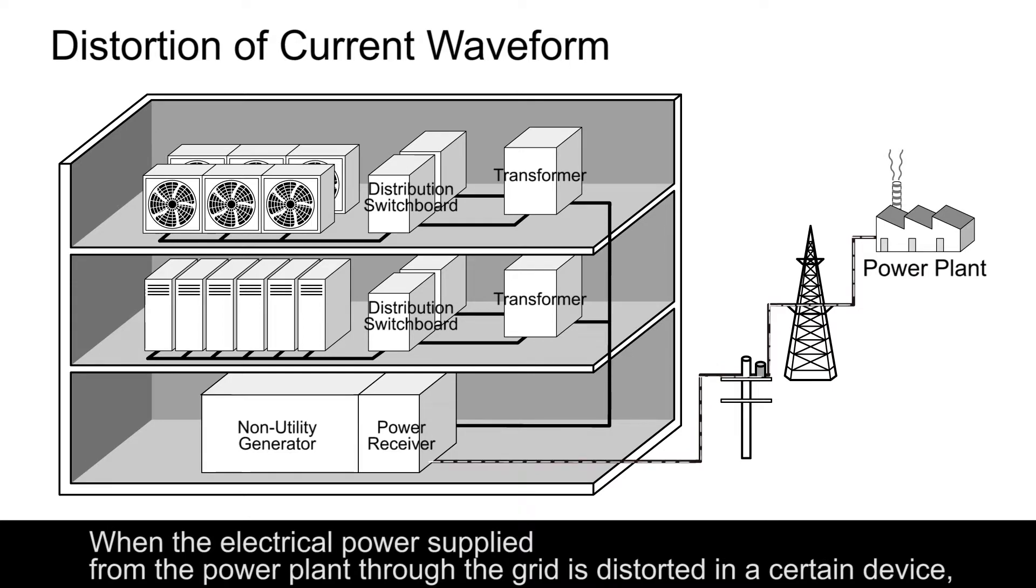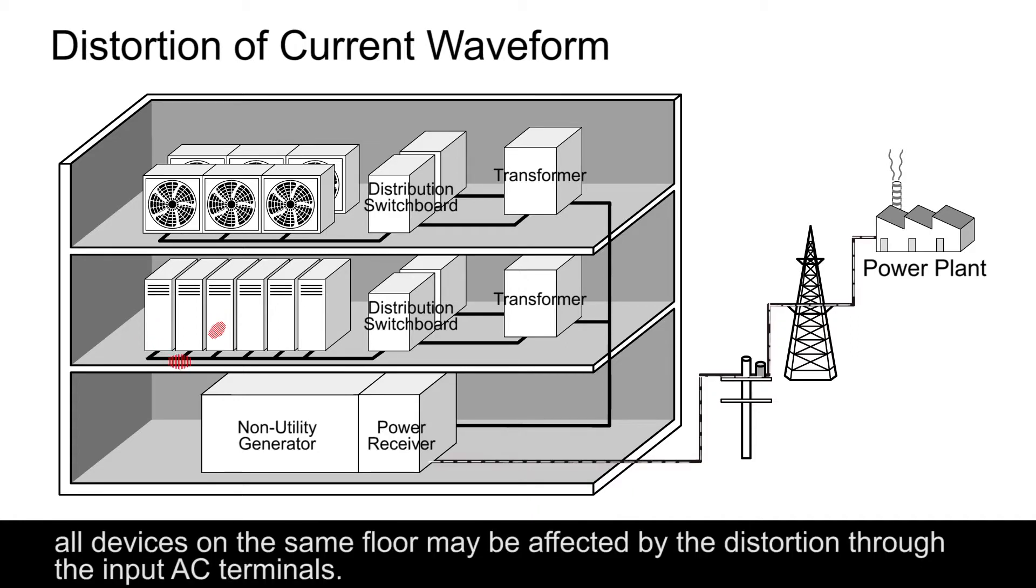When the electric current in the electrical energy supplied from the power plant through the grid is distorted in a certain device, all devices on the same floor may be affected by the distortion through the input AC terminals.